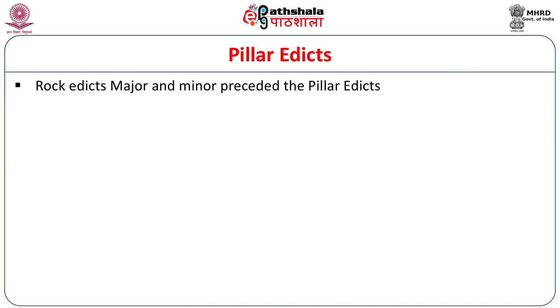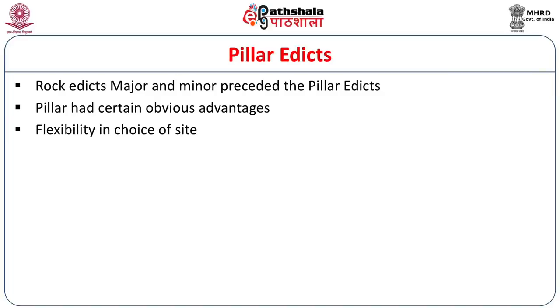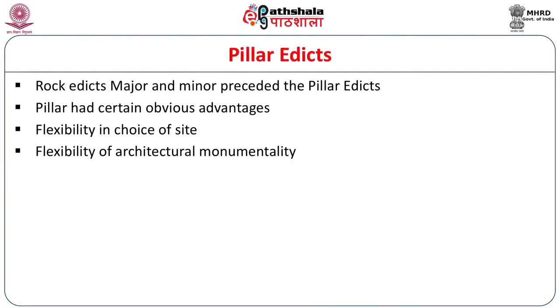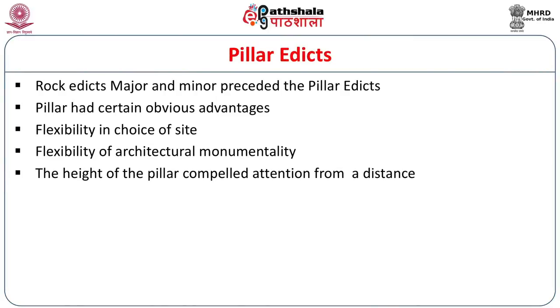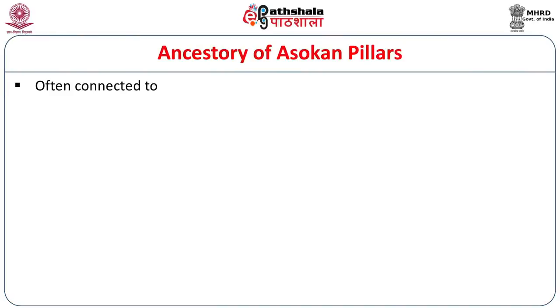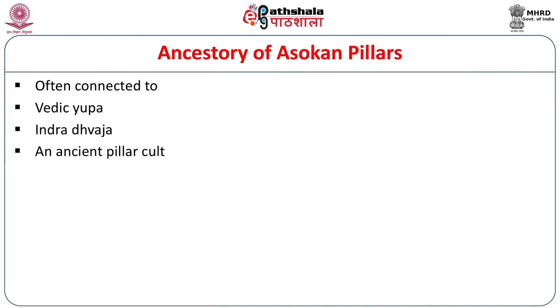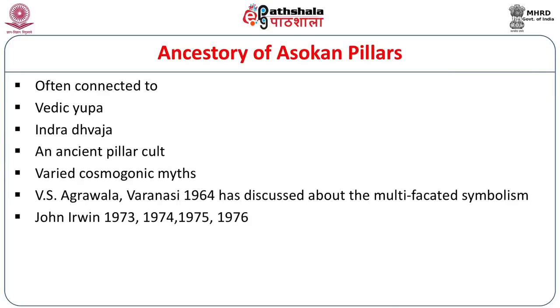Rock edicts, major and minor, preceded the pillar edicts. Pillars had certain obvious advantages because there was flexibility of choice — the emperor could erect pillars at different sites, whereas rocks occur on site and have to be inscribed in situ. The pillar edict sites were chosen by his officers or by the emperor himself. The height of the pillar compelled attention from a distance. Pillars also had an ancestry and scholars have connected them to the Vedic Yupa, Indra Dhvaja, ancient pillar cult, varied cosmogonic myths, and multifaceted symbolism.